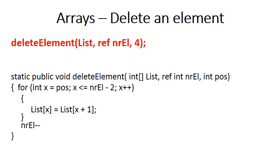So we end up with this final method that deletes an element, in this case at position 4. The for loop goes from position 4 to the second last element in the list, and it copies every next element into position x. So the element at position 5 is copied into 4, element 6 into 5, and so on, until we've copied the last element into the second last position — number of elements minus 2. And then after the loop, we decrement number of elements, so there is now one less element in the array.